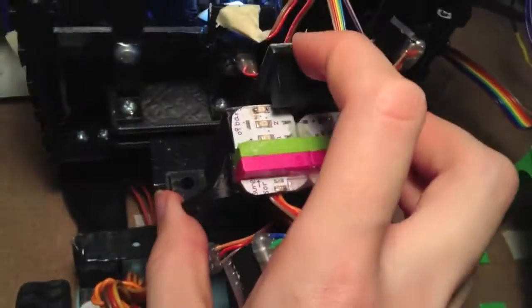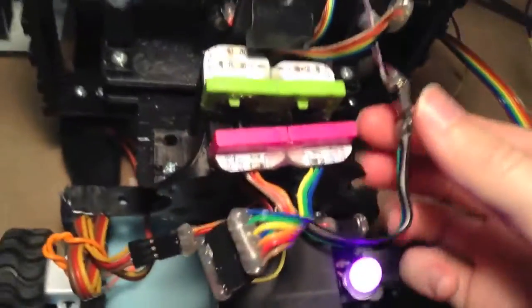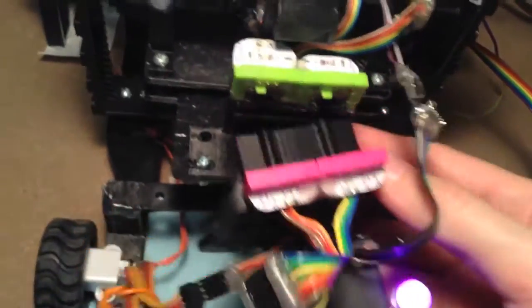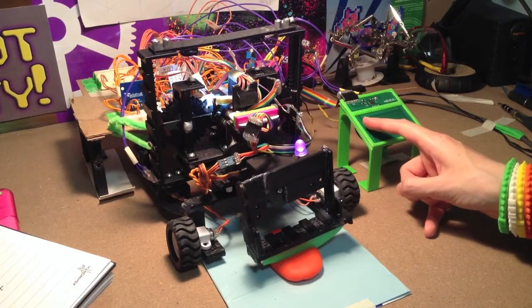Attached to the z-axis is the end effector. This can be easily removed for cleaning using these hacked little bits connectors. There is also a servo attached to this which tilts the knife.